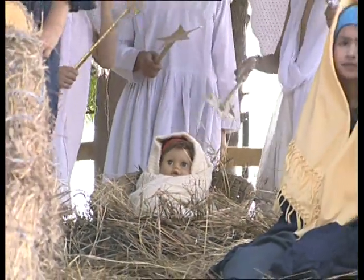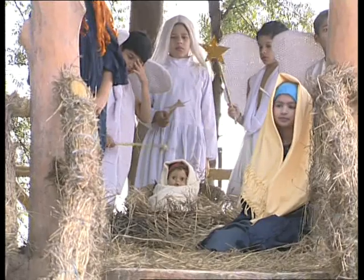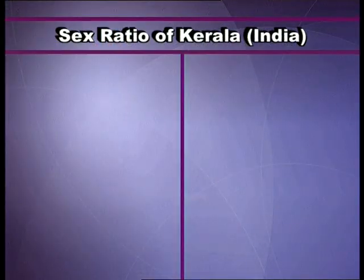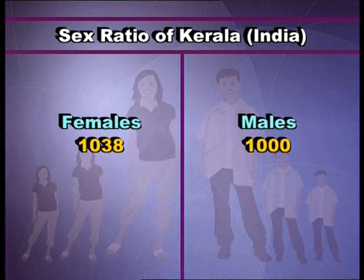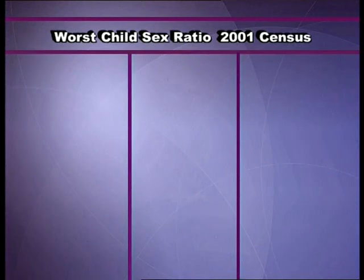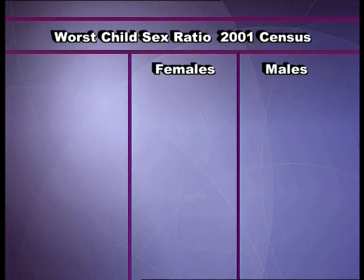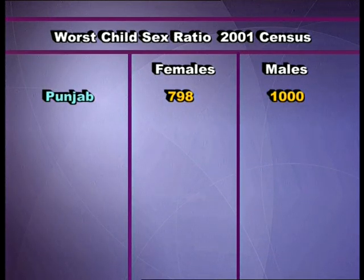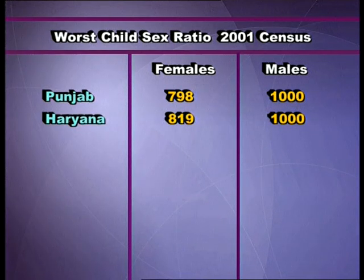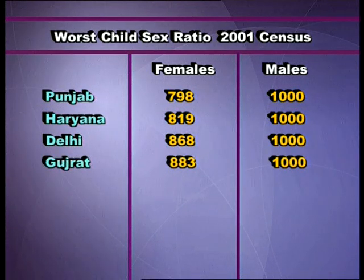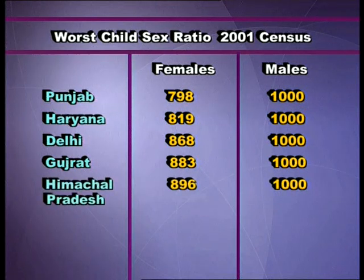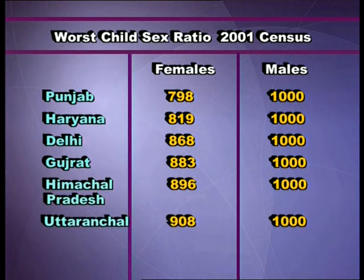In our country, there are interregional variations in the sex ratio. Kerala has a favourable sex ratio equal to that of Japan, that is 1,038 females to 1,000 males. According to the 2001 census, the worst child sex ratios have been noted in Punjab 798, Haryana 819, Delhi 868, Gujarat 883, Himachal Pradesh 896, Uttaranchal 908, and Rajasthan 909.